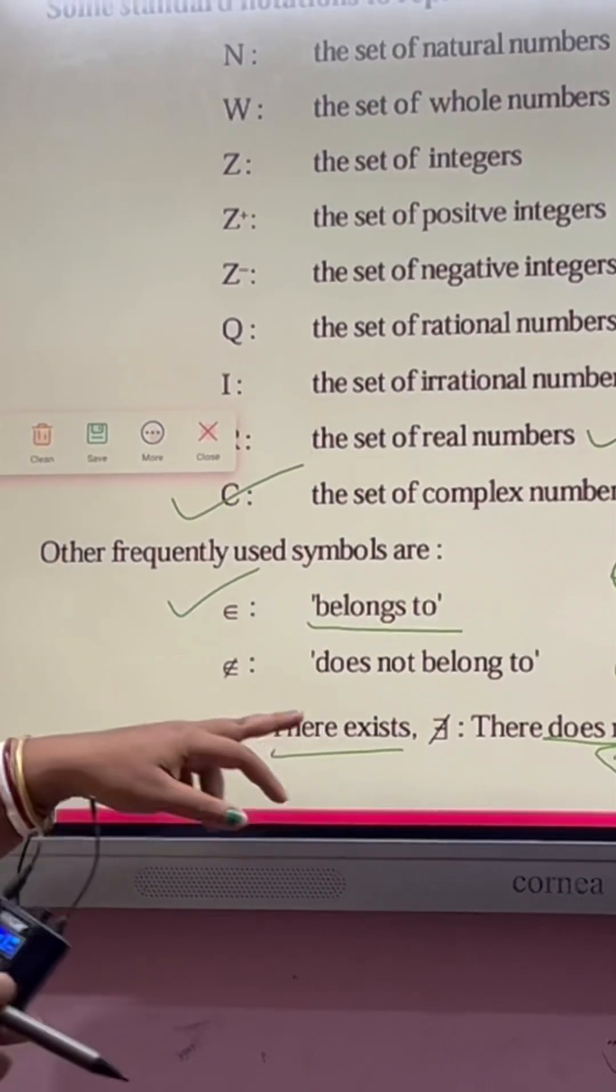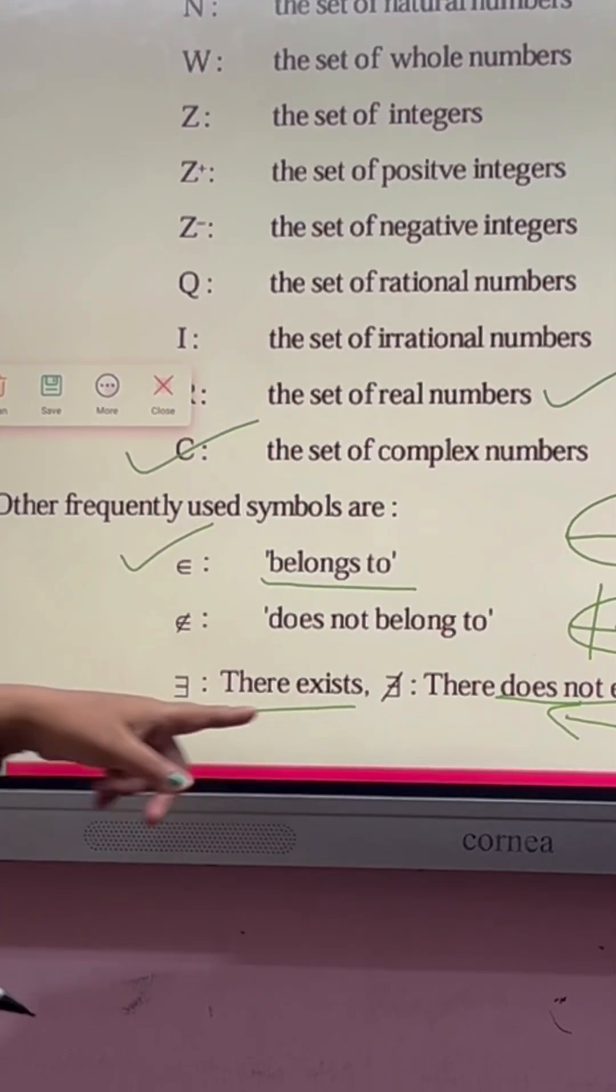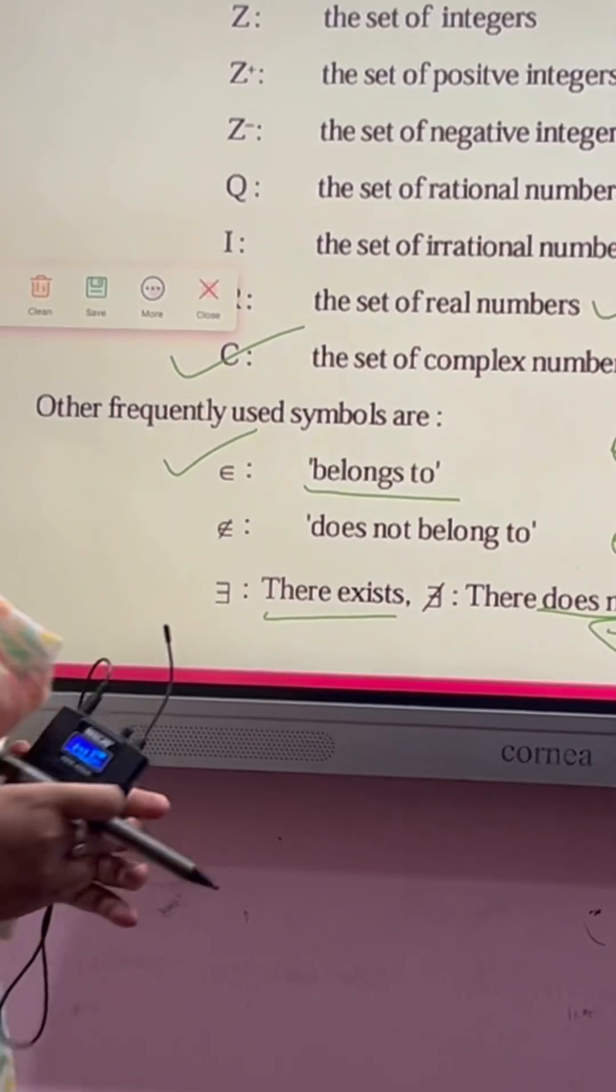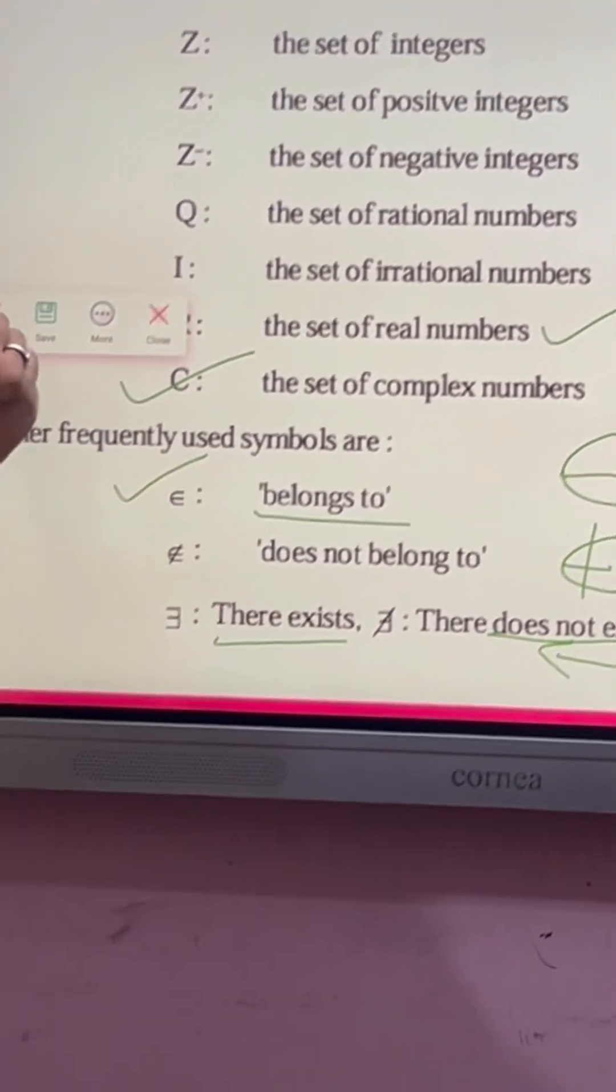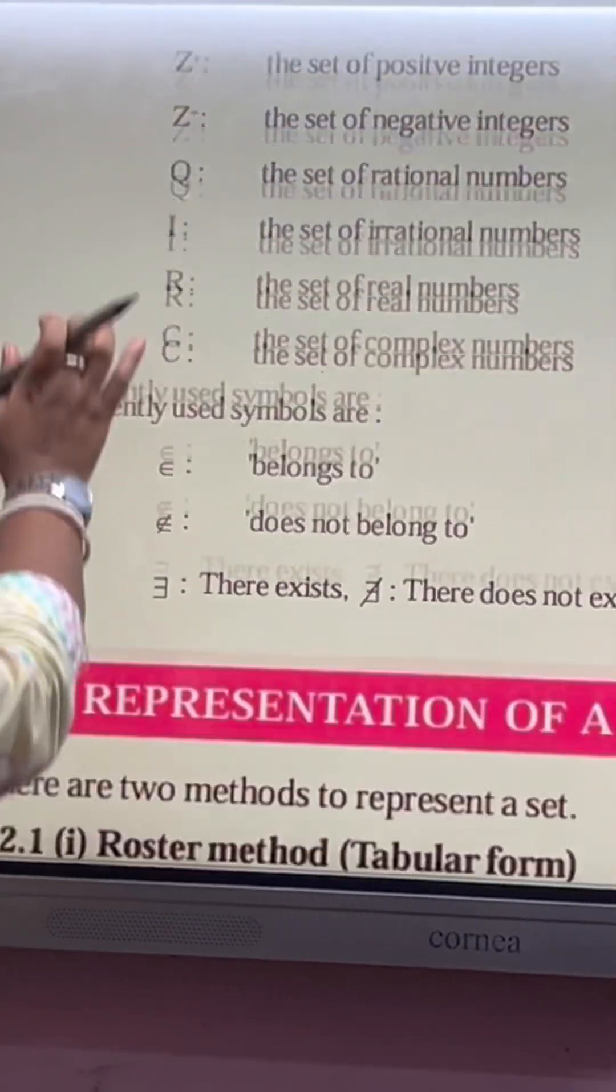We are writing 'there exists'. In place of 'there exists', it is the opposite of ∈. And if you cut it, then it will be 'does not exist'. So we are done with notations.